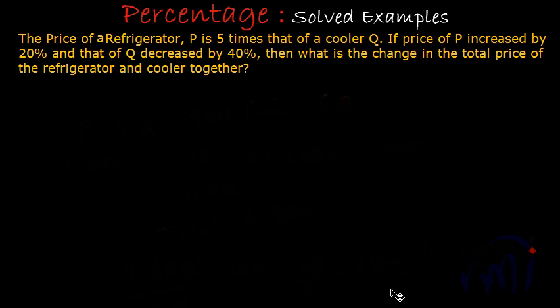Hi, so we have a problem which is a slightly tricky problem based on percentage, and this particular problem we are going to solve using two methods. First one is using algebra — we are going to use variables — and in the second method we will solve this problem for people who don't know algebra, and that will be the method in which we will not use variables. So let's first read the statement.